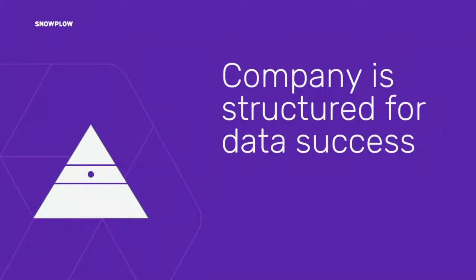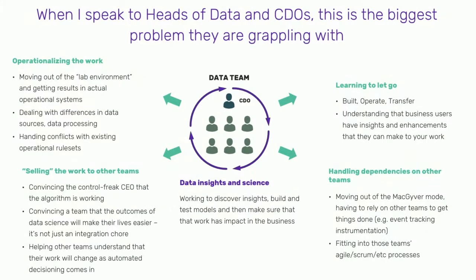That brings me to the next level in the hierarchy: the company itself needs to be structured for data success. This is one of the biggest problems that heads of data and chief data officers are grappling with. At the center is the data team working on insights and data science — building and testing models — and making sure that work has an impact on the wider business. But making sure it has that impact is super tough.